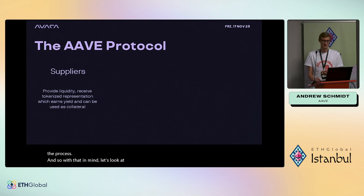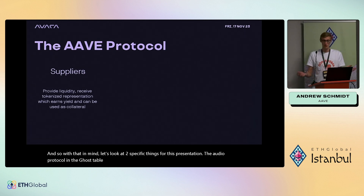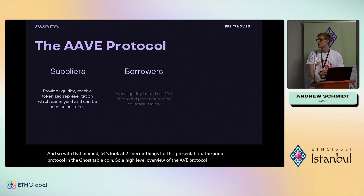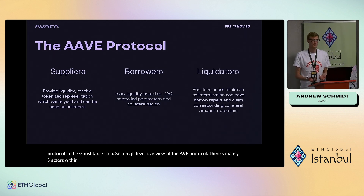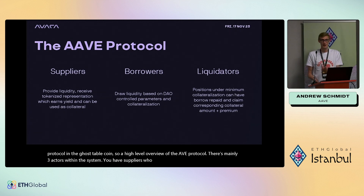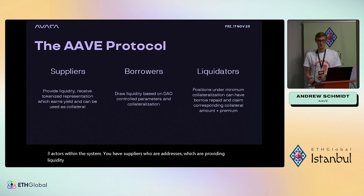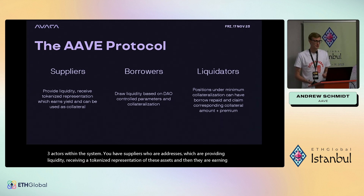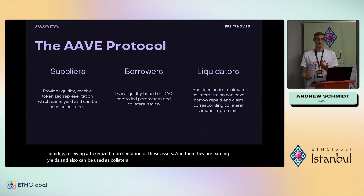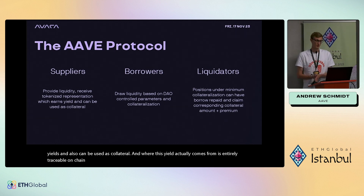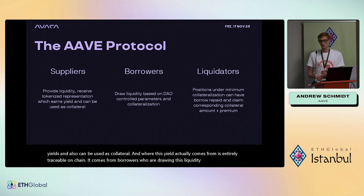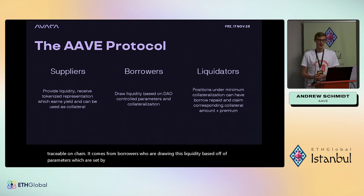With that in mind, let's look at two specific things: the Aave protocol and the GHO stablecoin. At a high level, there are mainly three actors within the Aave system. You have suppliers — addresses providing liquidity, receiving a tokenized representation of these assets, earning yields, which can also be used as collateral. The yield is entirely traceable on-chain; it comes from borrowers drawing liquidity based on parameters set by Aave governance.